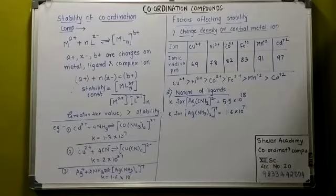A+ is the charge on the metal. X- is the charge on the ligand. And b+ is the complex ion charge respectively. With the charge balance, the stability constant is the products upon the reactants. So we have written here, the K value is the constant, the stability constant.